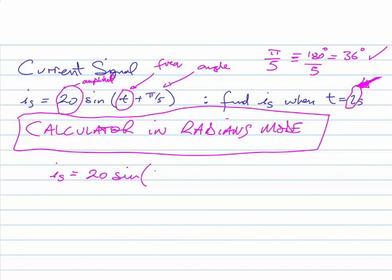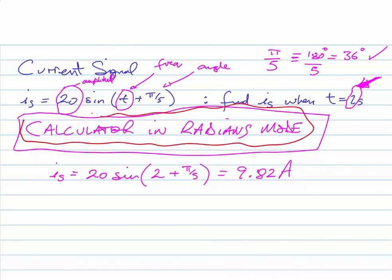20 times the sine of 2 + π/5. So we're in radians mode, we tap all that in and we should arrive at 9.82. Well it's current so units are amps, so always put in units if there are units there. So it's really important, again to overemphasize this, put it in radians mode whenever you see π appear anywhere in brackets.